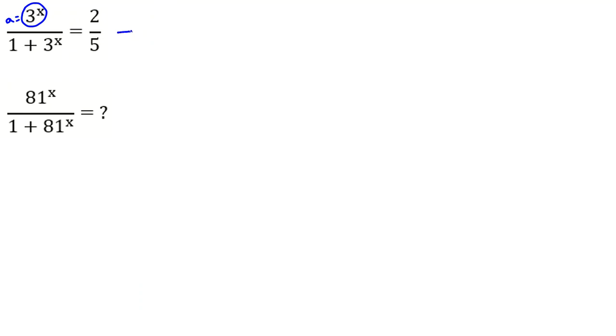We can write it is equal to a over 1 plus a, where 3 to the x equals a, equals 2 over 5. Now we cross multiply: 5a equals 2 times 1 plus a. So, equals 2 plus 2a.